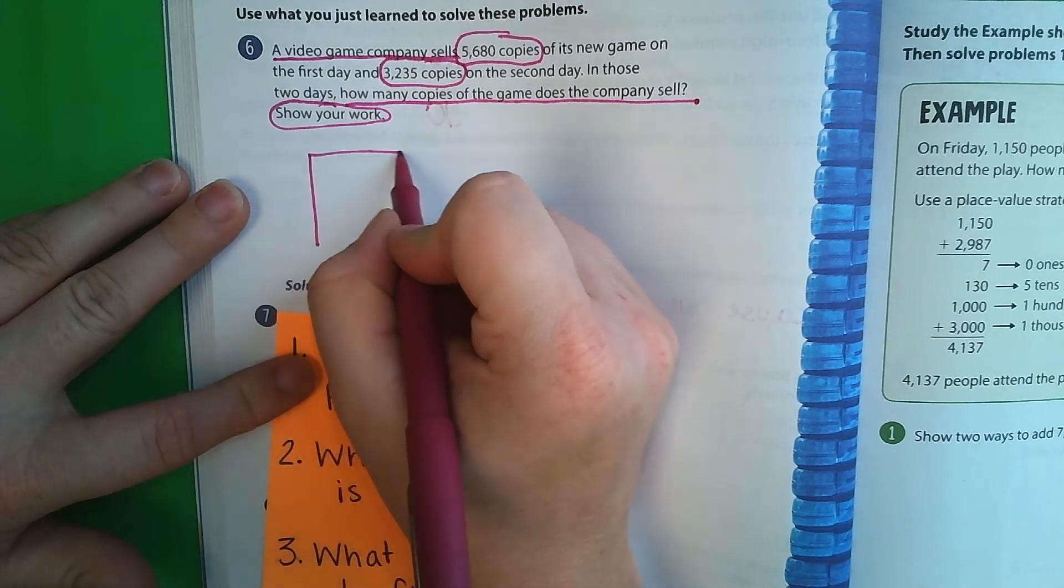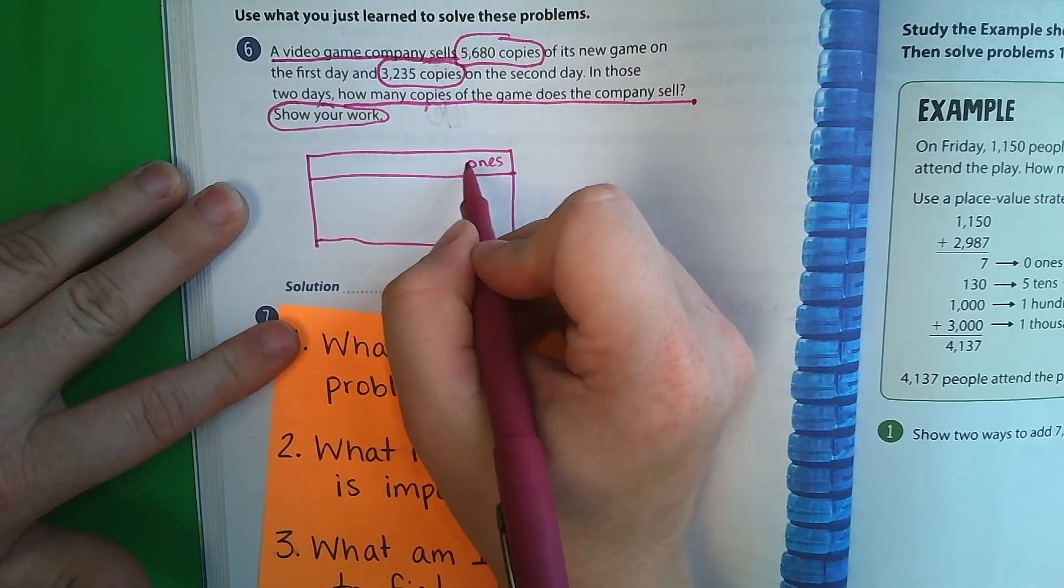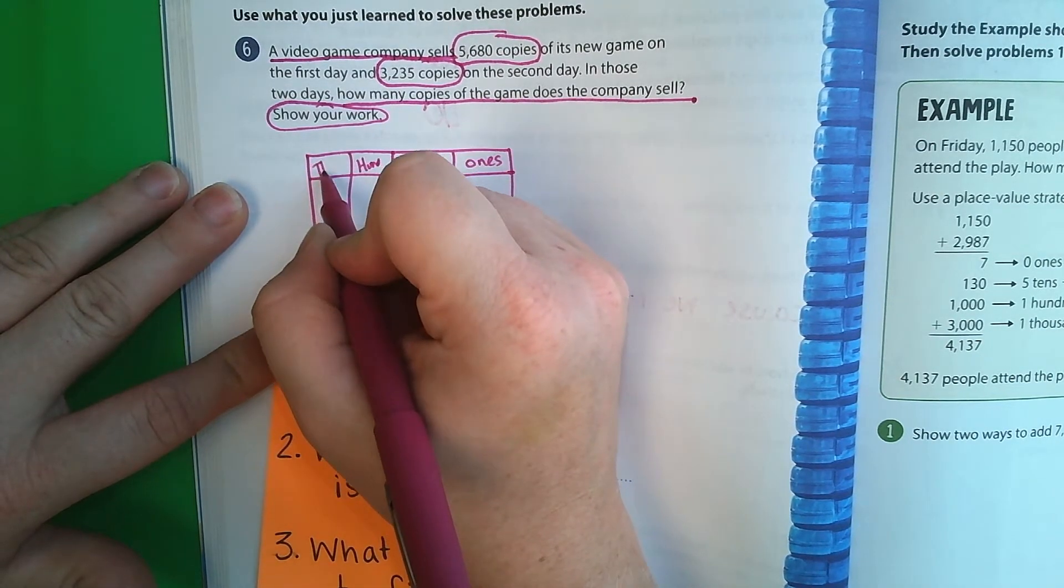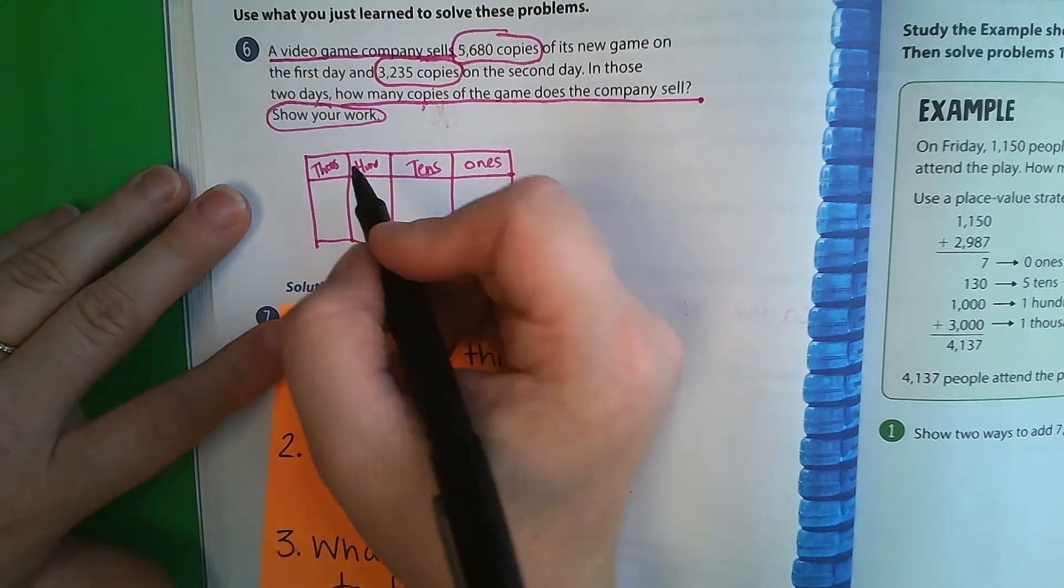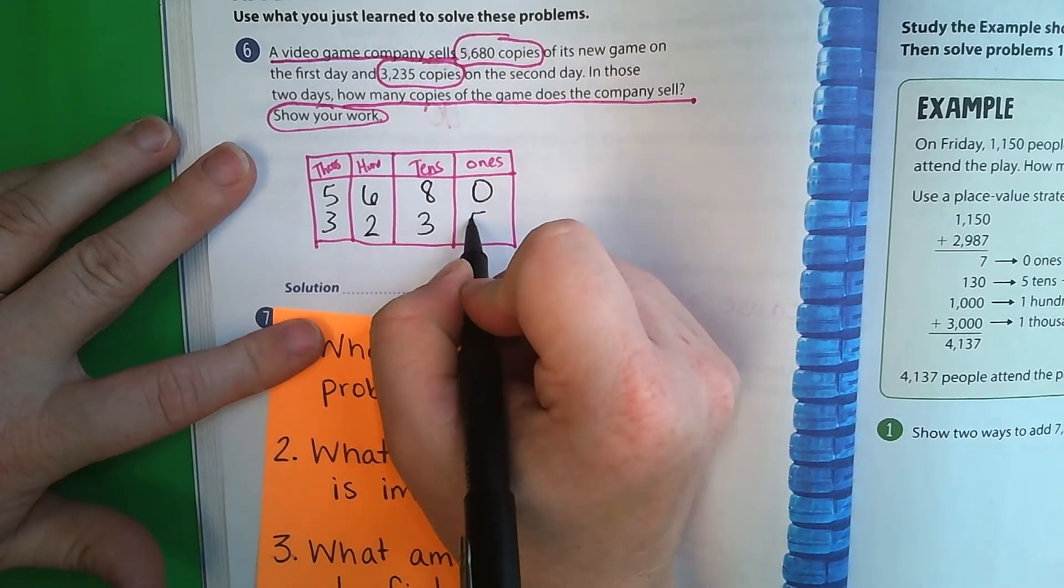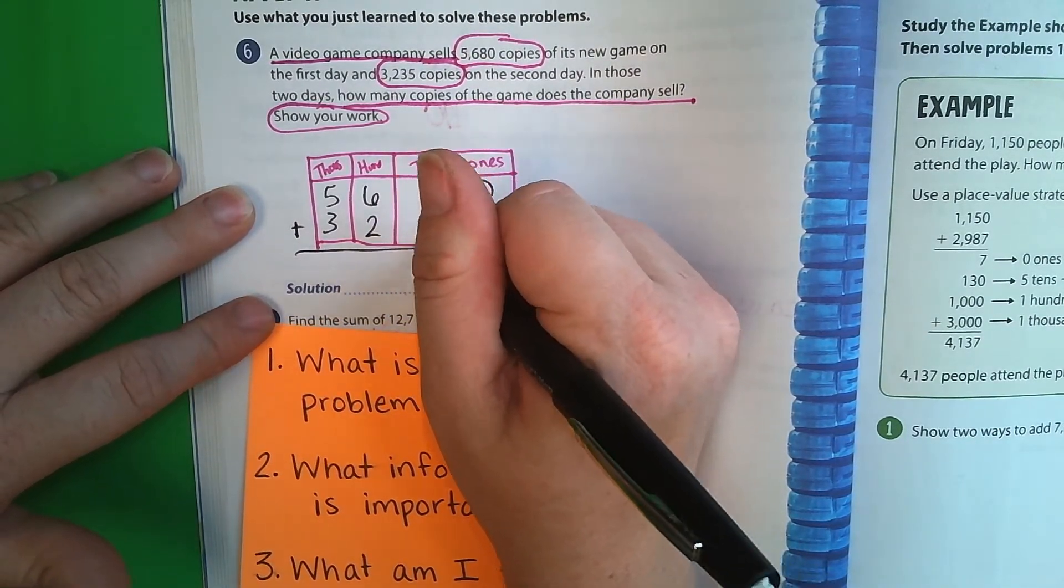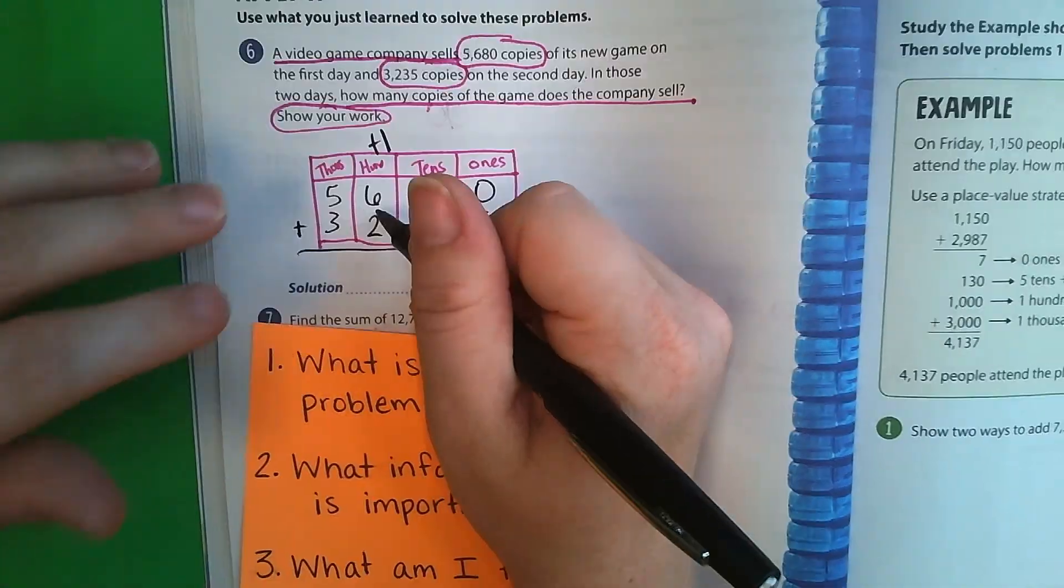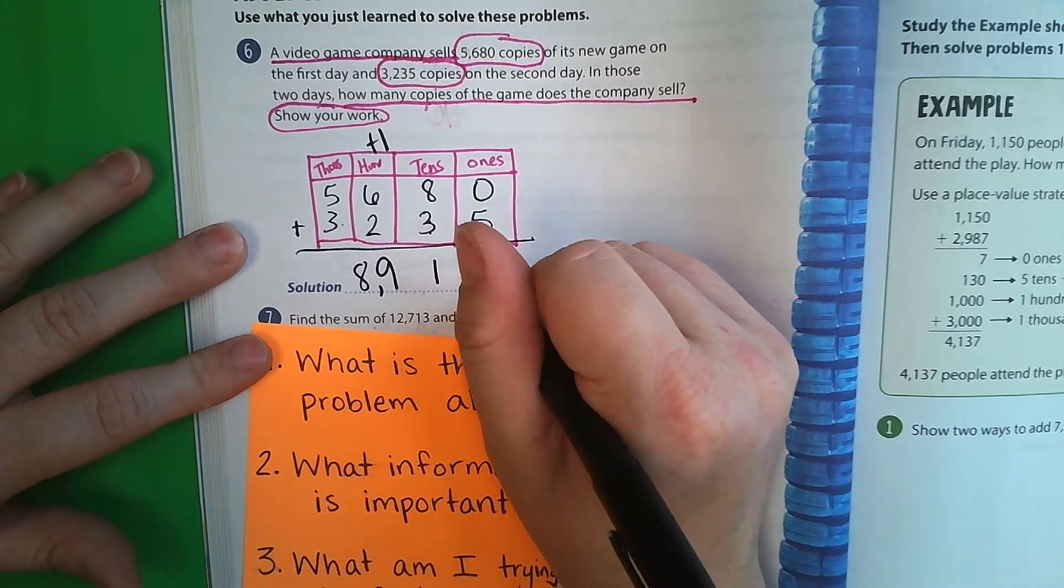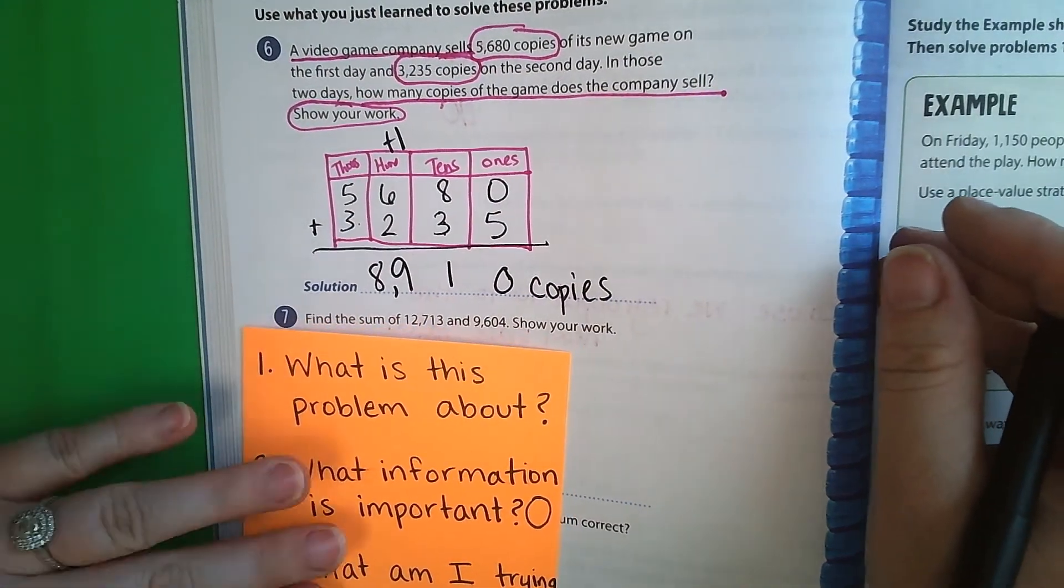I'm going to use a place value chart and we're going to do ones, tens, hundreds, thousands. Okay, now I'm going to put my numbers in here. 5,680 plus 3,235. 5 plus 0 is 0. 8, 9, 10, 11. Carry my 1. 6, 7, 8, 9. 5 plus 3 is 8. Don't forget my comma. And then we're going to put copies at the end for the label. So it's 8,910 copies.